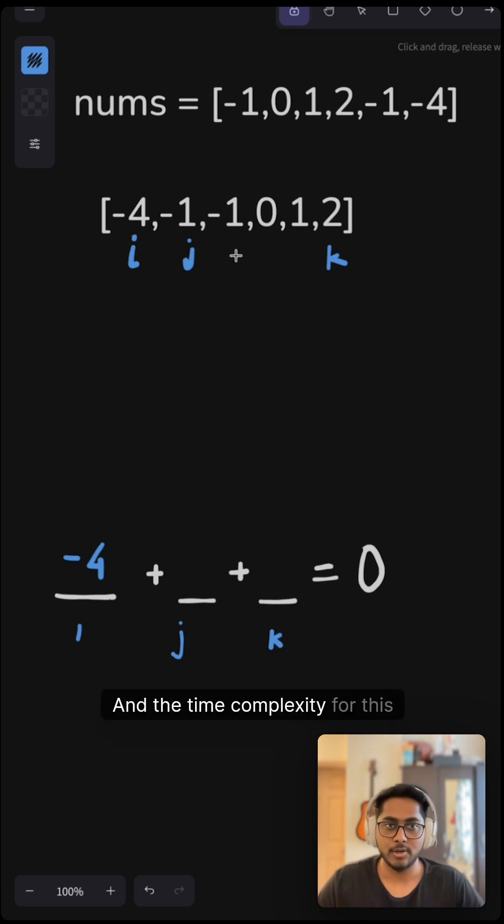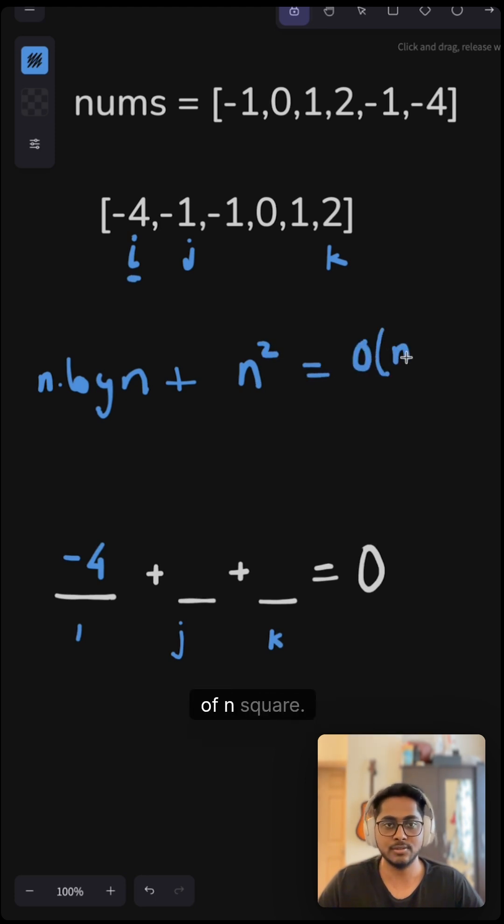And the time complexity for this approach would be, when we are sorting this array, it's n log n plus our i should be in our for loop. We are looping through the array with i and then two pointers, so that will be n squared. So the overall time complexity will be big O of n squared.